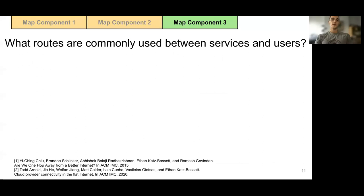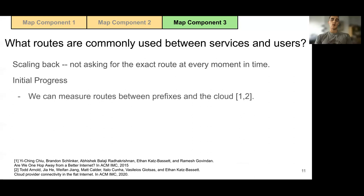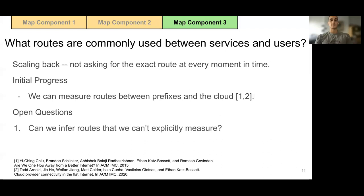Our third and final component identifies which routes are commonly used between services and users. Note that we say commonly used — we're scaling back a much more ambitious goal of identifying exactly which routes are used at every point in time. There's still a lot of work that needs to be done here. All we can do is measure routes between prefixes and the cloud, but we do have lots of ideas. Given our limited viewpoints on the internet, one question is whether we can infer the routes we can't explicitly measure.